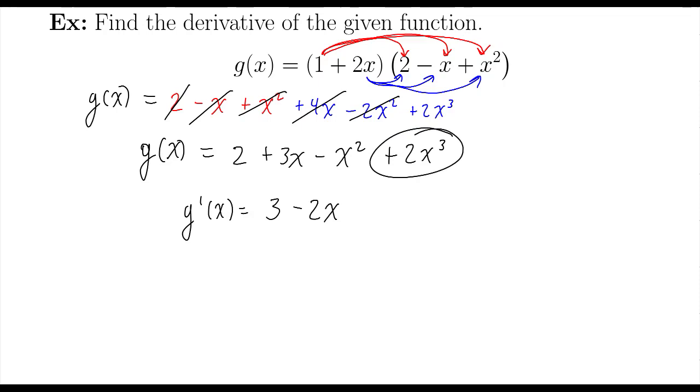Final term, positive 2x to the third power. 2 times 3 is 6. Subtract 1 from the exponent. 3 minus 1 is 2. So there we go. After all of that, we have g prime of x equals 3 minus 2x plus 6x squared.